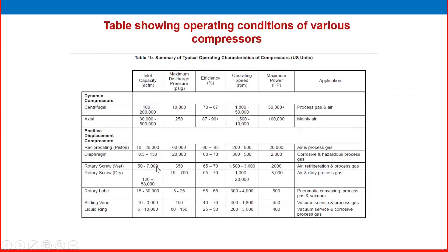There is also a table showing compressor details — similar to the previous graph representation. For dynamic and other compressor types, five parameters are listed: capacity, discharge pressure, efficiency, operating speed, maximum power, and application. Centrifugal has high pressure and relatively higher efficiency, suitable for process gas and air. Axial, positive displacement, various rotary, and reciprocating compressors are all listed. Make a pause and read, understand, and compare with your station compressor for a good idea.